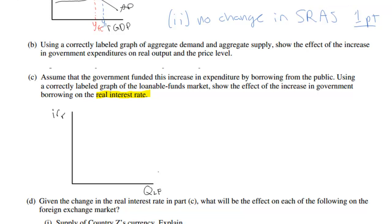The loanable funds market shows the supply of loanable funds, which represents the amount of savings in the nation's private banks, and the demand for loanable funds, which shows the demand for investment from the private sector — investment in capital and investment in new homes by households. Now, how does an increase in the government's budget deficit affect this market?